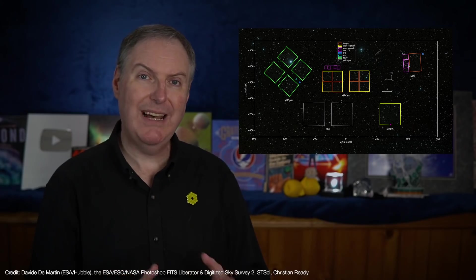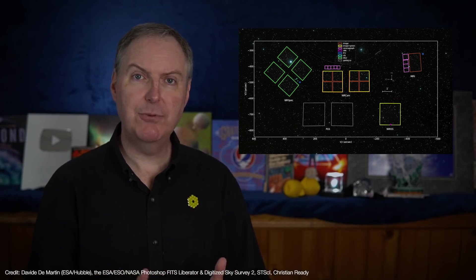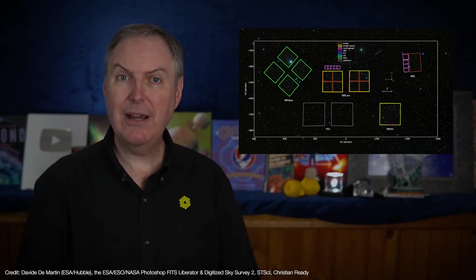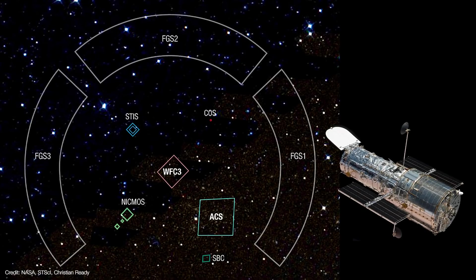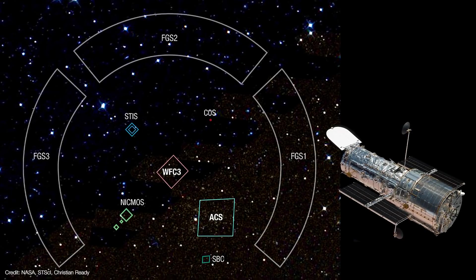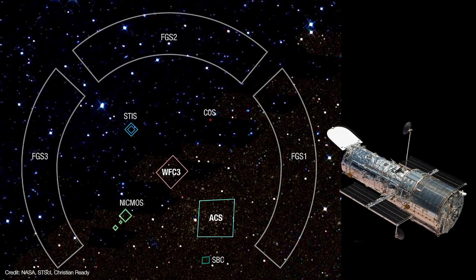But this approach allows Webb to operate multiple instruments at once. It's called parallel observing, which was pioneered with the Hubble Space Telescope in the 1990s, and it's a great way of maximizing science.